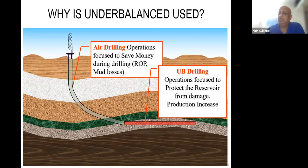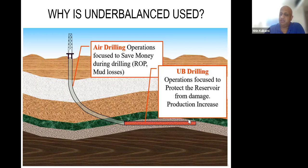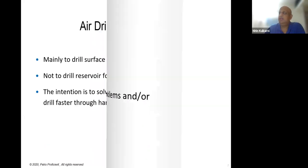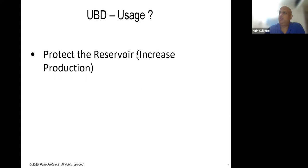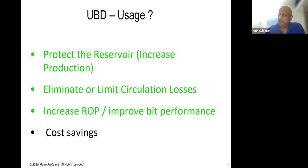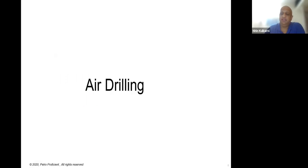If drilling hard formations, you can use air in combination with a percussion drill bit to achieve higher ROP. The goal is to drill all surface sections fast to reach the reservoir section sooner and complete the well. In summary, the uses of UBD are: to improve production, protect the reservoir from formation damage, eliminate loss circulation, increase ROP, increase bit performance, and save the cost of mud and drilling time.